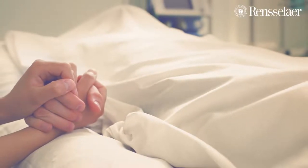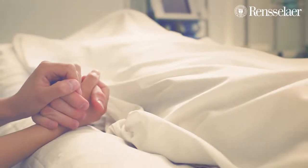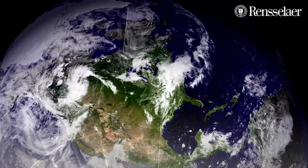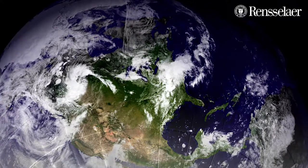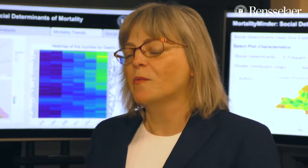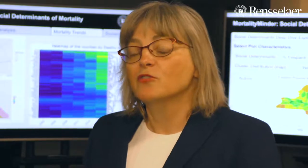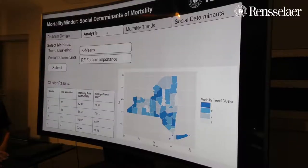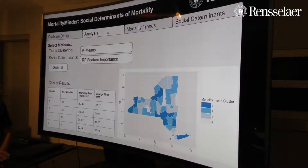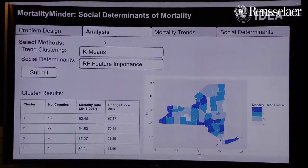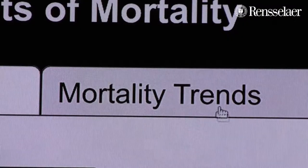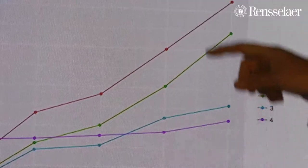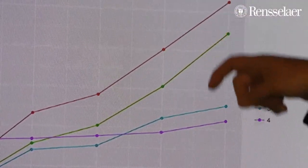Mortality rates are going up in the United States, and they're going down in the rest of the developing world. We need to figure out what to do about this. So we're making an application, MortalityMinder, that looks at mortality at the community level and helps us find the causes of why this is going up.